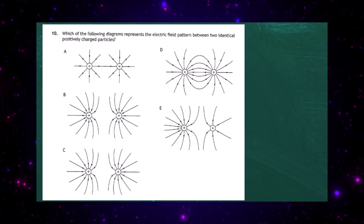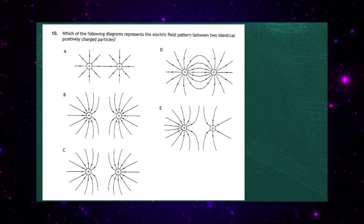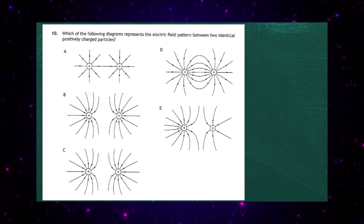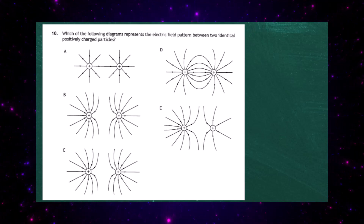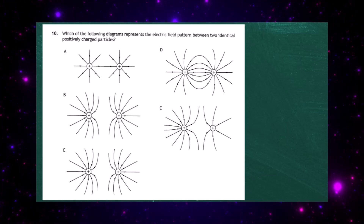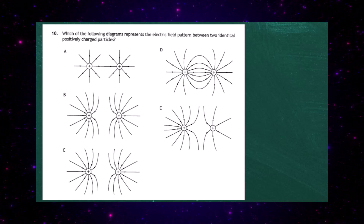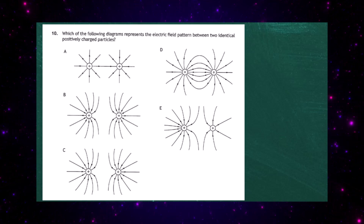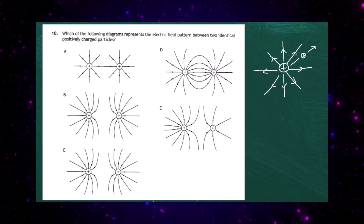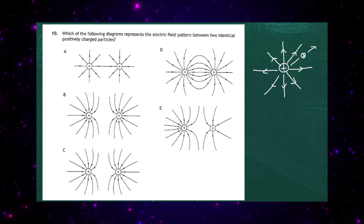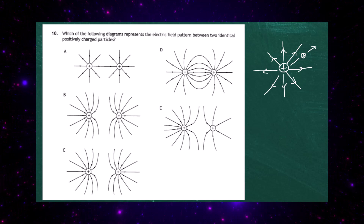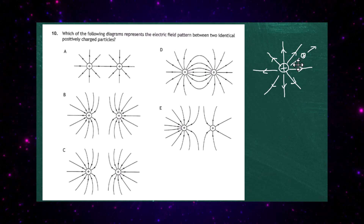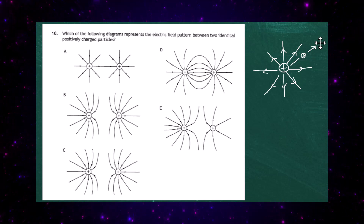Question 10 from Paper 1 of the 2023 Higher Physics Examination from the SQA. Which diagram represents the electric field pattern between two identically positive charged particles? The electric field is shown by lines that indicate where a small positive test charge will experience a force and in what direction. You can see the positive charge surrounded by the electric field, with all field lines pointing away from it.